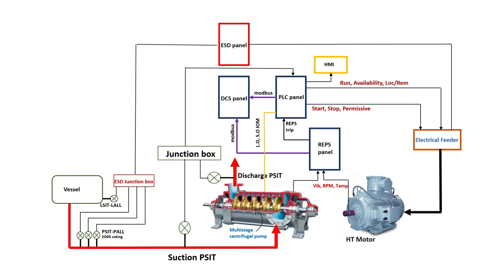As you can clearly see, we have DCS panels, PLC panels, rotary equipment protection system panel, ESD panel, HMI panel, and the electrical feeder. These different panels monitor and control the multi-stage centrifugal pump and the HT motor. This is the overall brief of the complex control loops for this system.